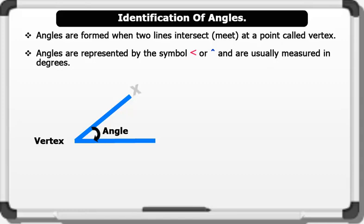For instance, the lines x and y meet at o. The angle formed is called angle xoy or angle yox.